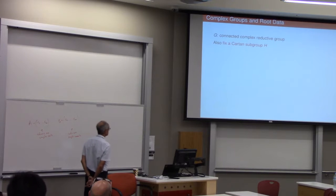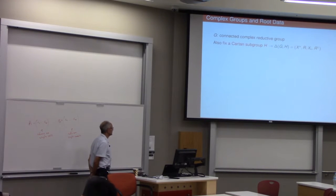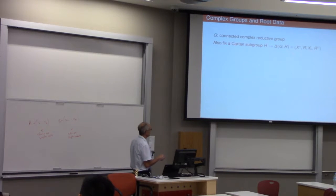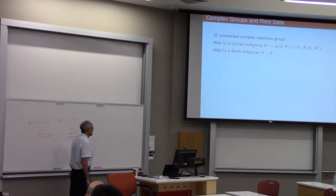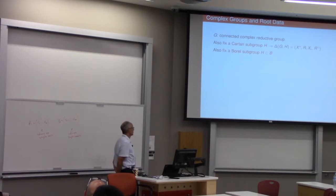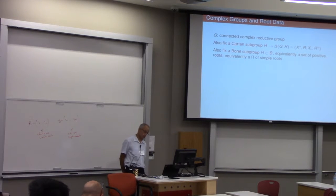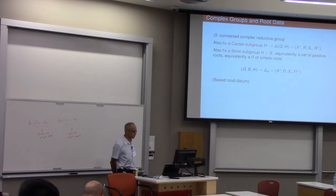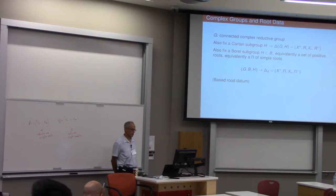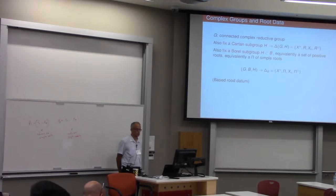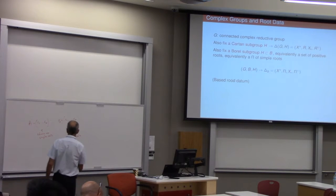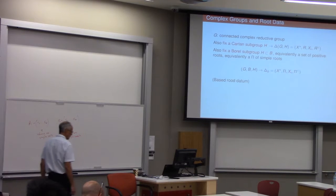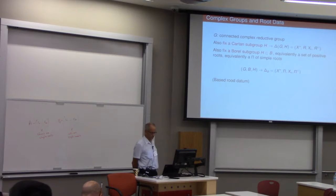All right. So we're given our connected complex reductive group, and we're going to fix a Cartan subgroup. And that gives us this root datum. And the root datum is X upper star, X lower star, this set R and R check. We're also going to always fix a Borel subgroup. And fixing a Borel subgroup containing the Cartan is the same thing as choosing a set of positive roots. And that's the same thing as choosing a set of simple roots. And that gives rise to the notion of a based root datum, which is the G, B, and H together give you X upper star and a set of simple roots, X lower star and a set of simple co-roots. And that is really what I was writing down here. It's really a based root datum. And in Atlas, a complex root is exactly the same thing as a based root datum.